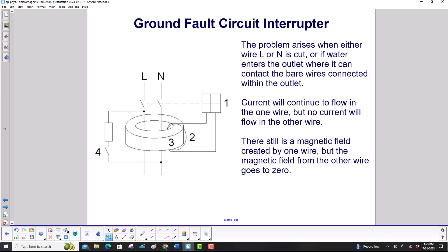The problem arises when either wire L or N is cut, or if water enters the outlet where it can contact the bare wires connected within the outlet. So you could cut up here if somebody was doing improper construction work and didn't pay attention to where the wires were inside the wall. Or maybe there's something wrong with the hairdryer. So this wire, instead of connecting to the rotor, maybe breaks off and connects to the surface of the hairdryer.